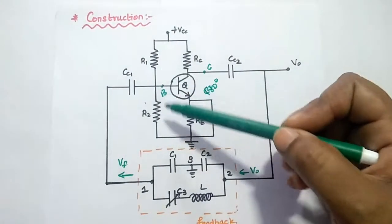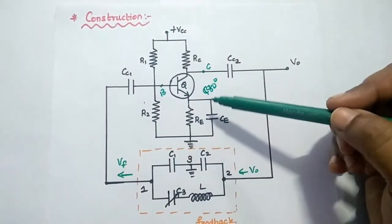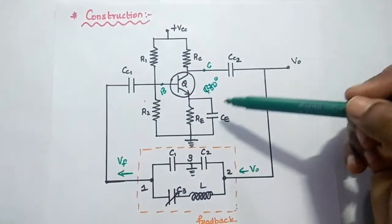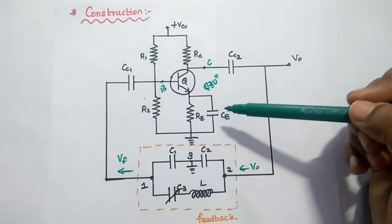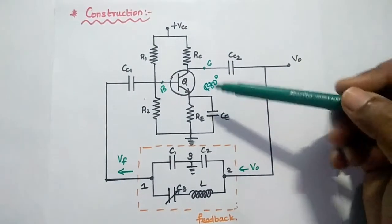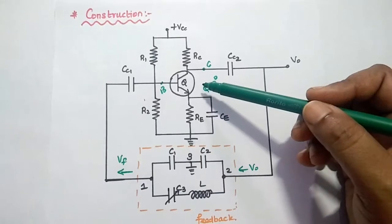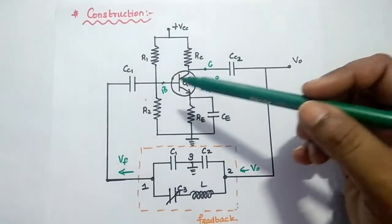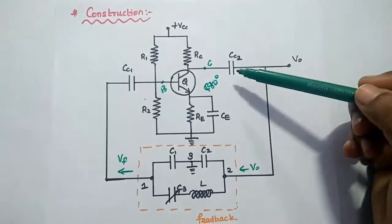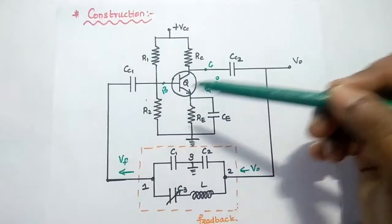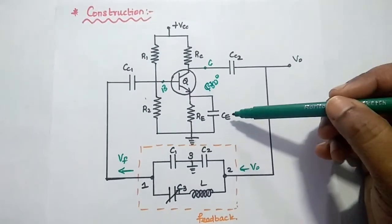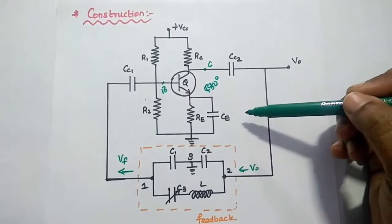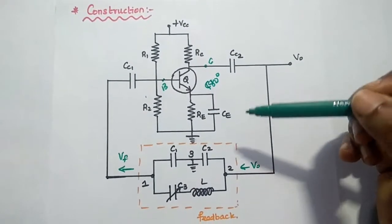The resistors R1, R2, and RE are used to provide proper DC bias to the transistor. CC1 and CC2 are the coupling capacitors at the input side and output side. CE is the bypass capacitor.